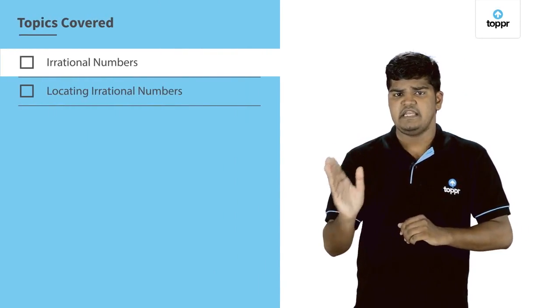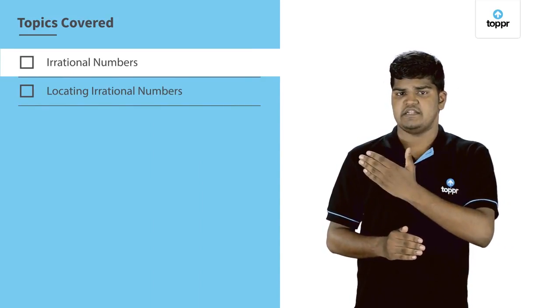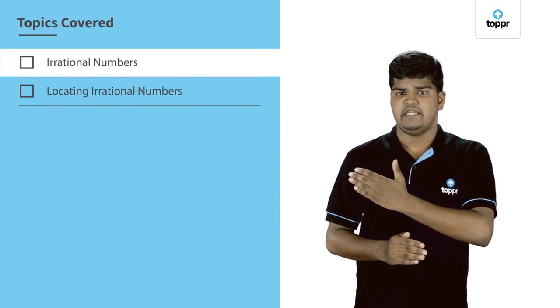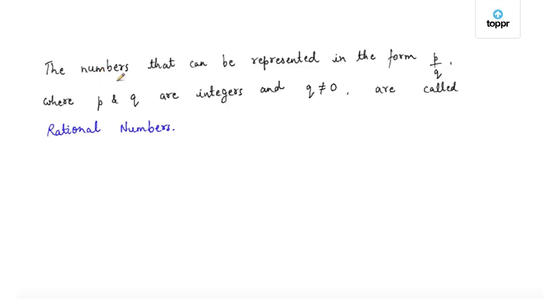Hello. In our last class, we revised about the rational numbers. In this lecture, we will discuss the irrational numbers and locate them on the number line. But first, let us recall the definition of rational numbers for a quick revision. The numbers that can be represented in the form p by q, where p and q are integers and q is not equal to zero, are called rational numbers.